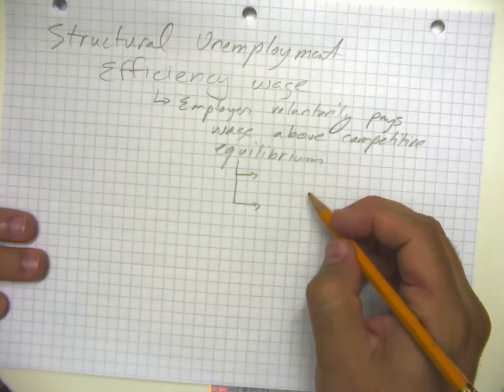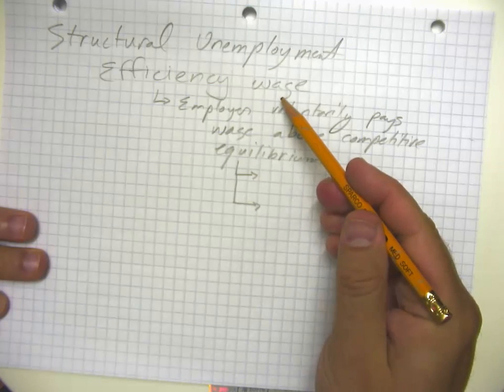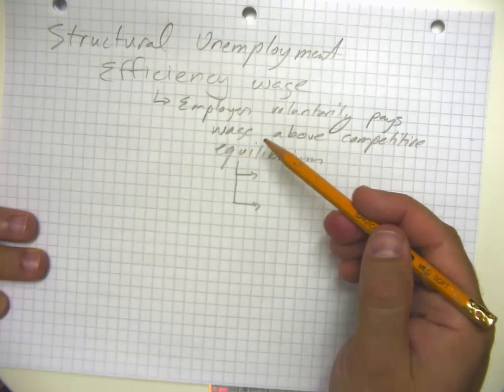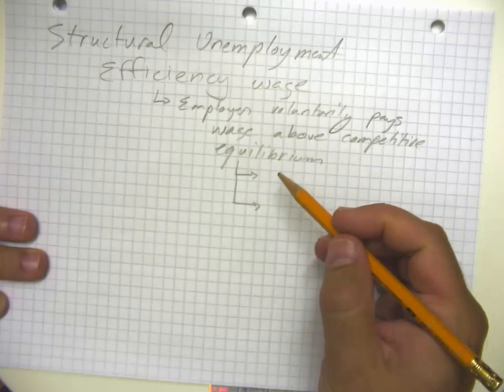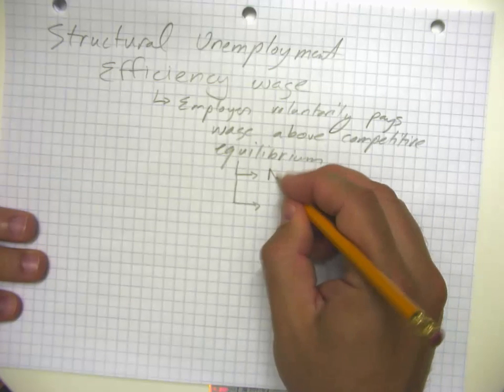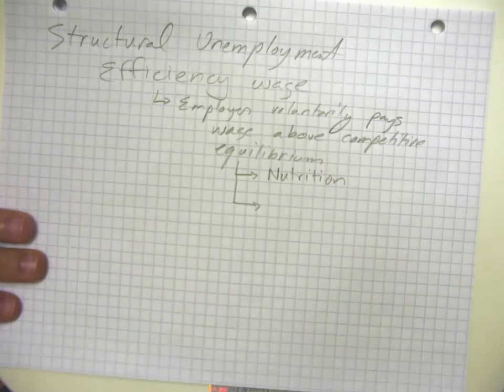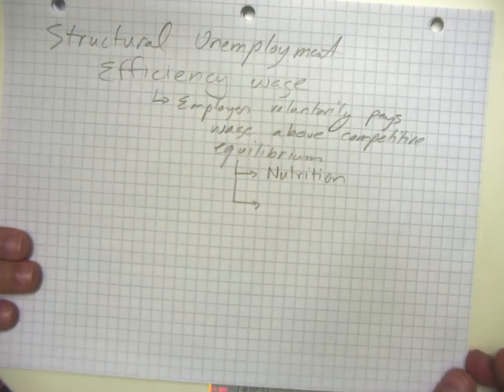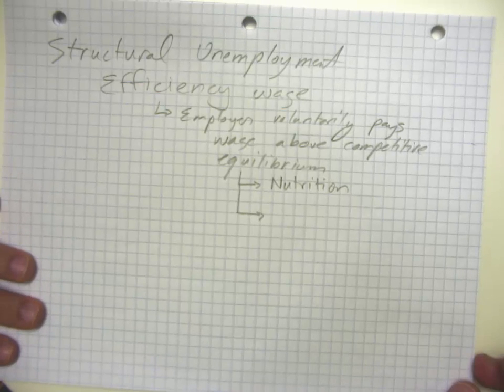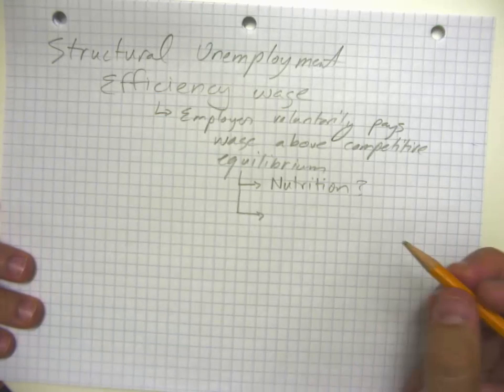It could be that this comes from a couple of different effects. In a really low income economy, you might see that if we pay people a higher wage, they have better nutrition. And with better nutrition, they're able to work more efficiently because they have more energy. In the U.S. economy, I'm pretty sure that's not a likely consideration since most of us are pretty overweight as it is, but in a third world economy, that could be important.